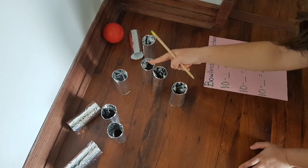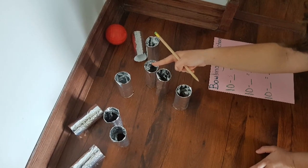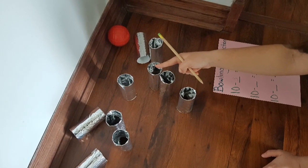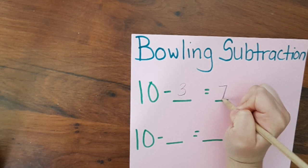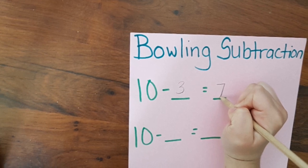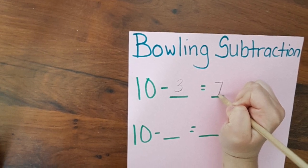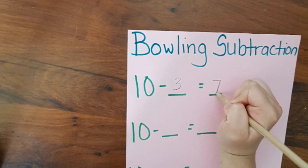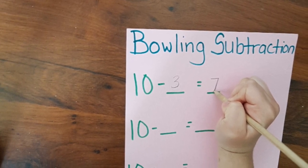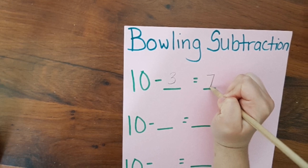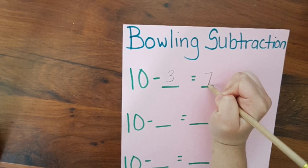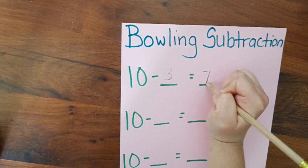Count how many pins were knocked over. Record that number on your recording sheet. You started with ten pins, three were knocked down. How many pins were left standing? That's right, seven.